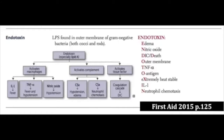Our immune system has co-evolved with these bugs so it's able to recognize it and mount a response to it. A couple things to note: it's heat stable, which means if you boiled it you could still get sick from it — it wouldn't kill it. Not only are we talking about gram-negatives that have this, but also Listeria monocytogenes, which is a gram-positive rod and the only gram-positive that has LPS.